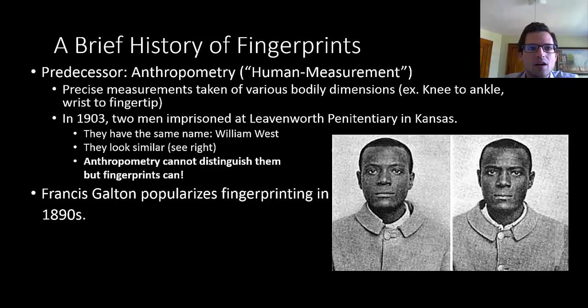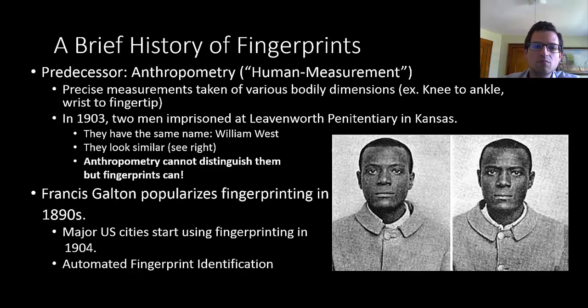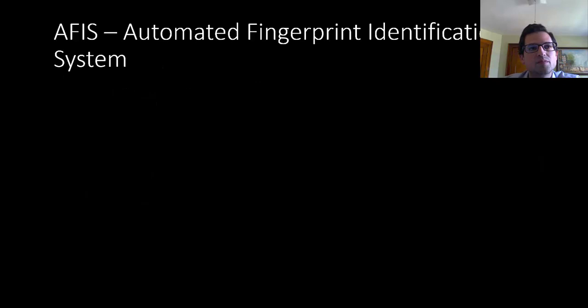So Francis Galton was the one who popularized fingerprinting in the 1890s, but the use of fingerprinting didn't really take off in the US until 1904 after this case of William West and after Scotland Yard came to the US and did demonstrations. Since then, this has been an extremely common tool in forensic science, and we've developed automated fingerprint identification systems, which were first launched in the 1970s.